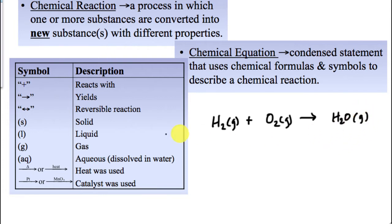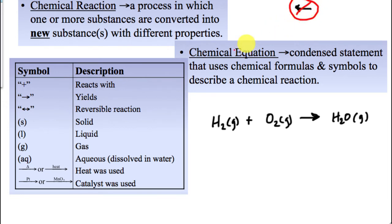For right now, we're only going to use an arrow pointing in one direction, and the arrow should always go toward the right. Later in the second semester, we'll look at reversible reactions and equilibrium, where the arrow can go both forwards and backwards. For now, we're staying with non-reversible reactions — hydrogen plus oxygen becomes water.